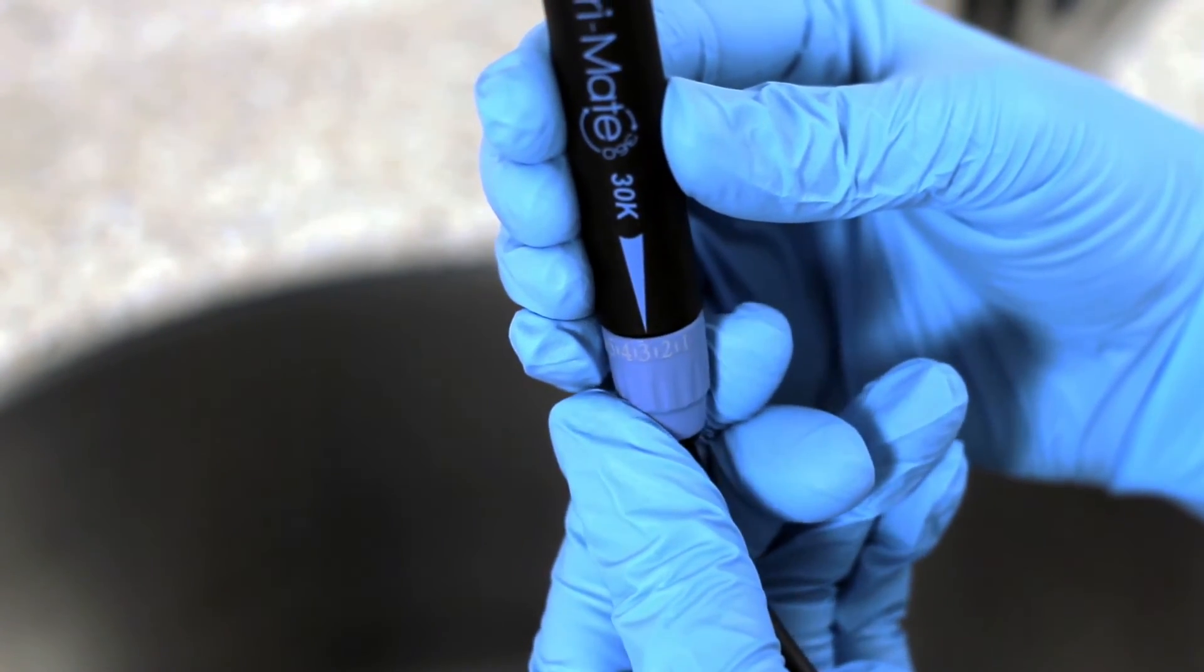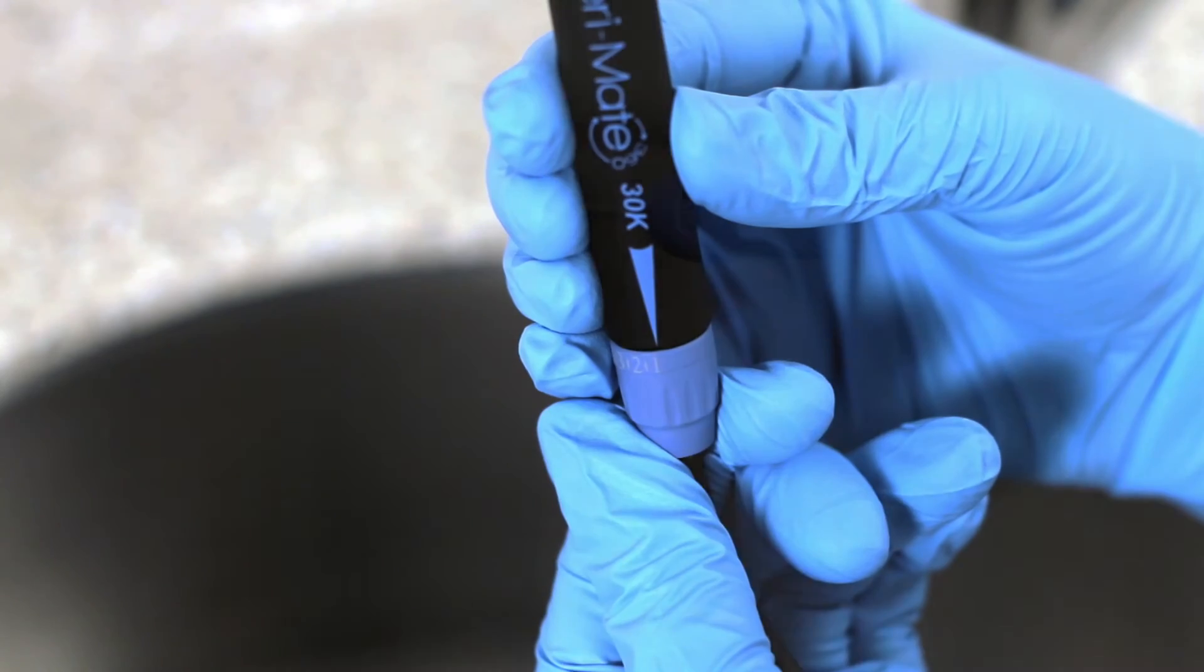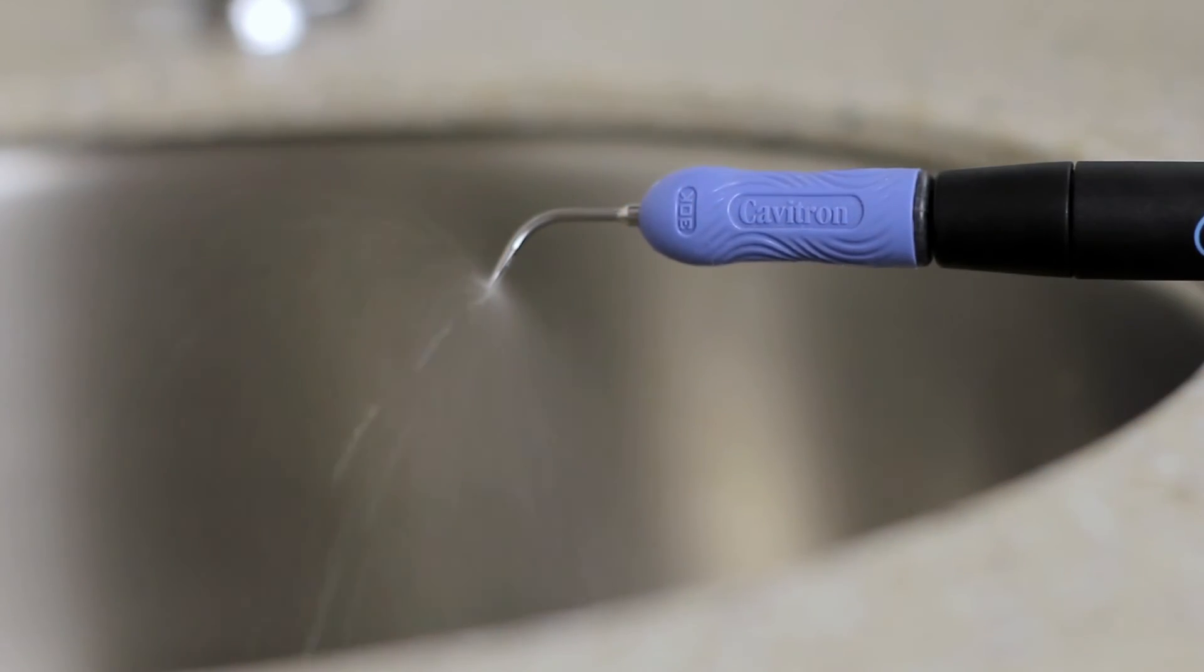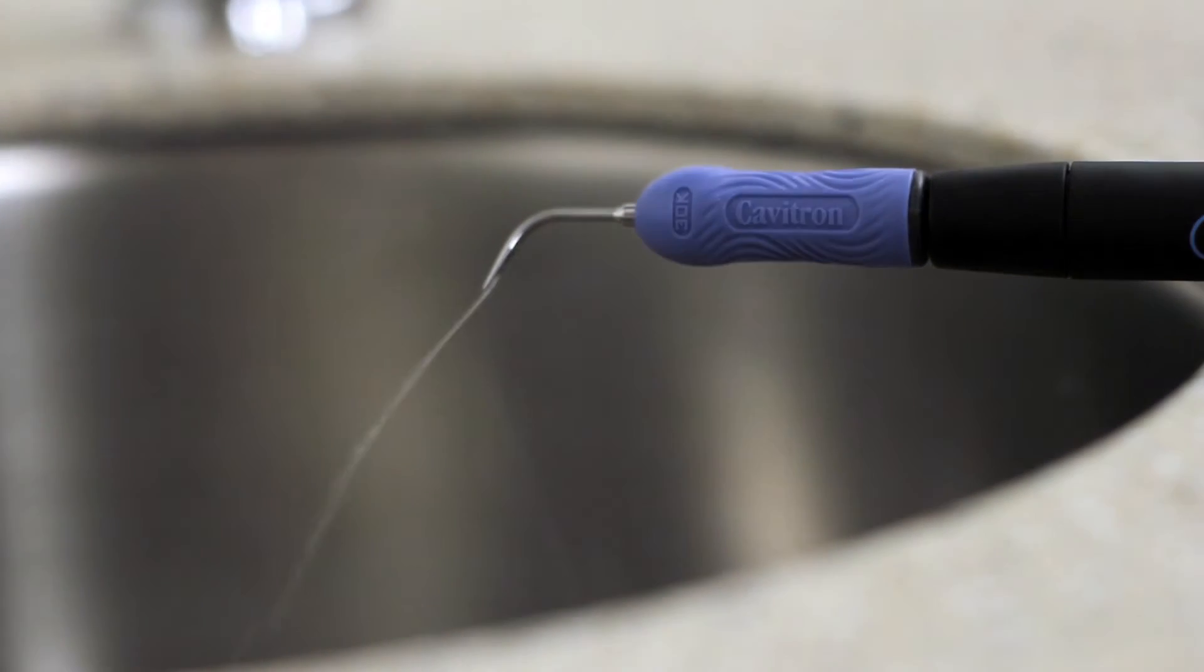The flow rate through the handpiece will also determine the temperature of the lavage. Lower water flow rates will produce warmer lavage. Higher flow rates produce cooler lavage.